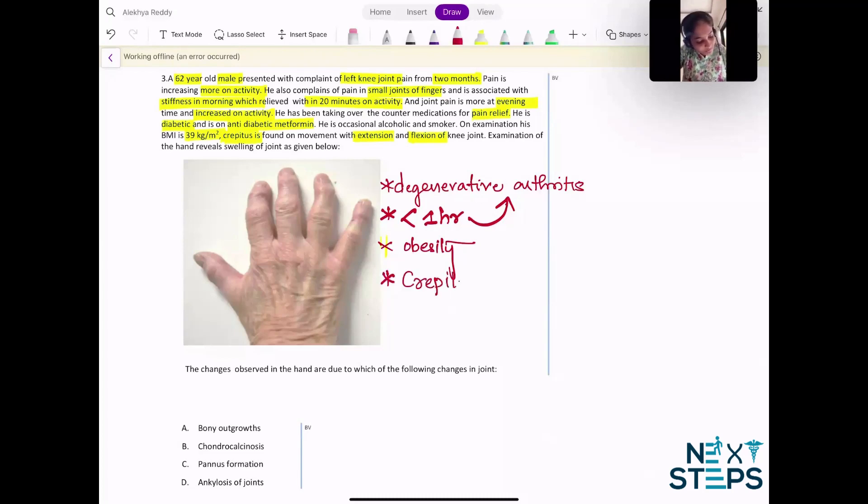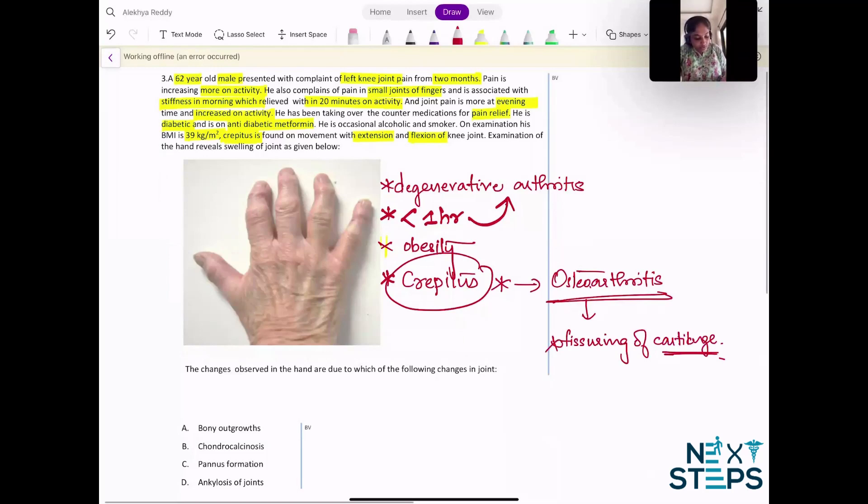Crepitus is classically seen in osteoarthritis. Osteoarthritis is characterized by fissuring of the cartilage, the chondral surface due to mechanical stress, and then erosion of the underlying bone.